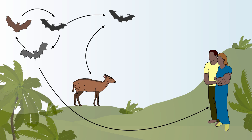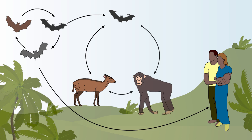A more likely scenario involves intermediate animals like the diker, a small deer-like animal that is hunted for food, or primates that are exposed to the virus from bats they encounter in the jungle. Once these animals become infected, any direct human contact with them allows the virus to be transferred into a human.